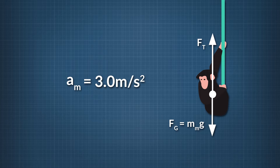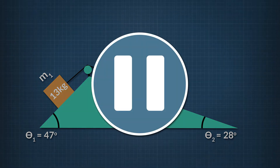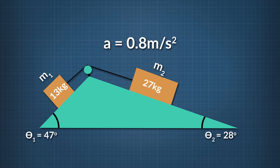Now let's solve another second law problem involving inclined planes. Two blocks, where M1 equals 13 kilograms and M2 equals 27 kilograms, sit on two frictionless planes — the first elevated at 47 degrees and the second at 28 degrees. The masses are connected by a rope strung over a frictionless pulley. What is the acceleration of the masses? Assume that motion to the right is positive. The system of blocks accelerates to the right at 0.8 meters per second squared.